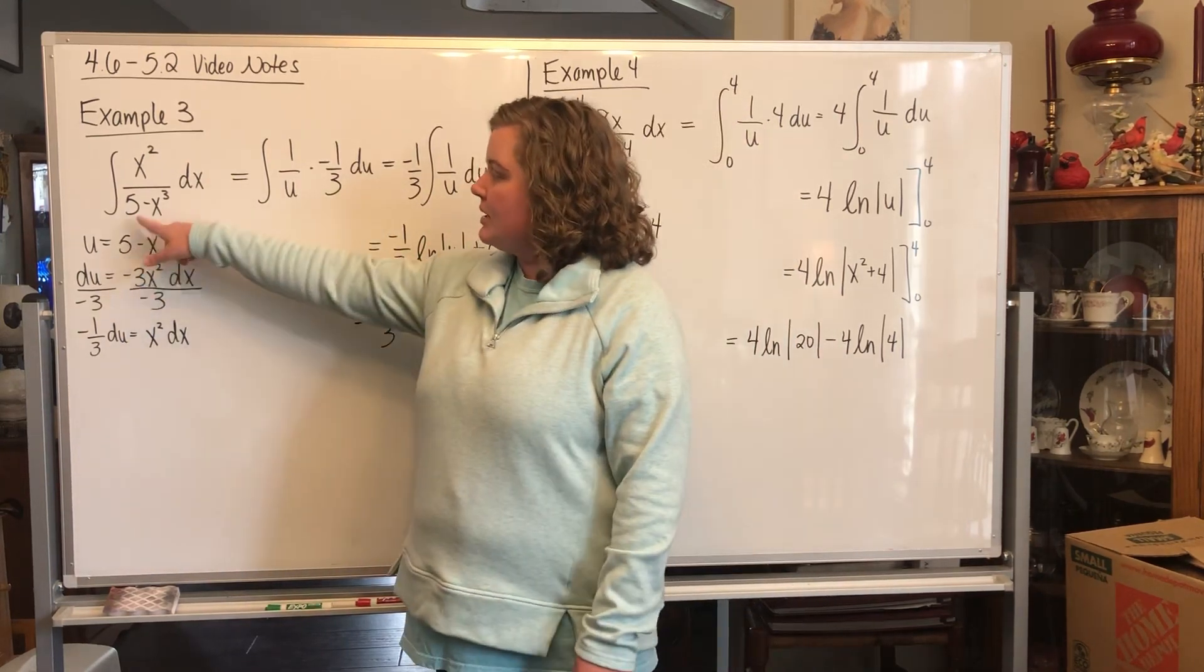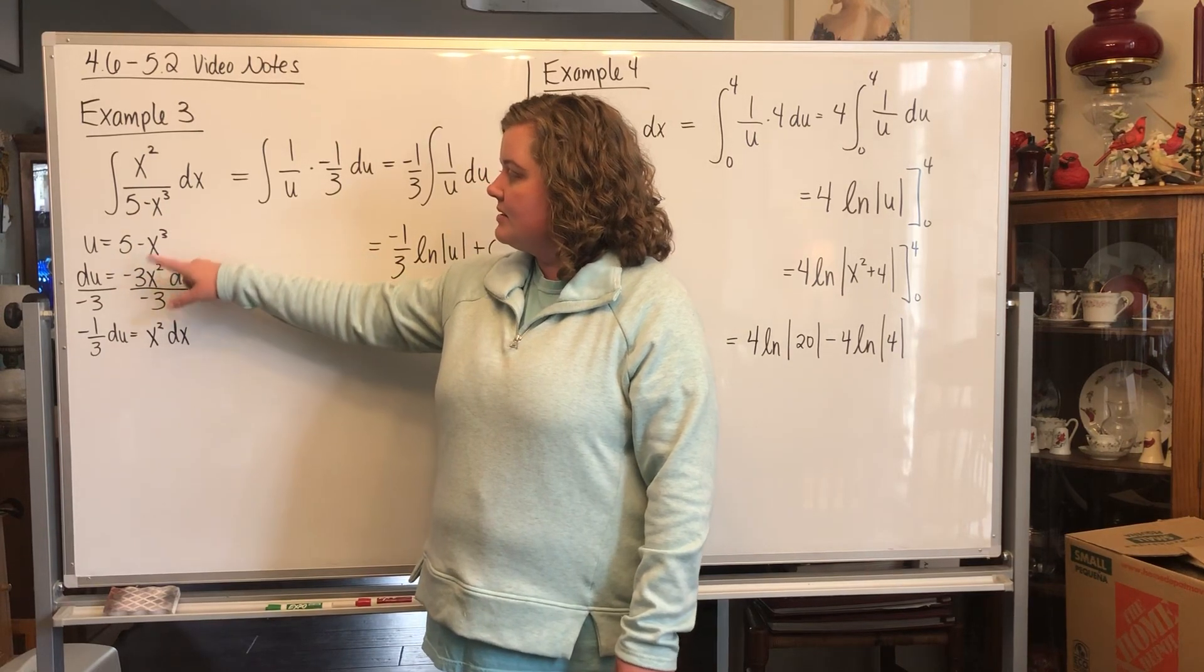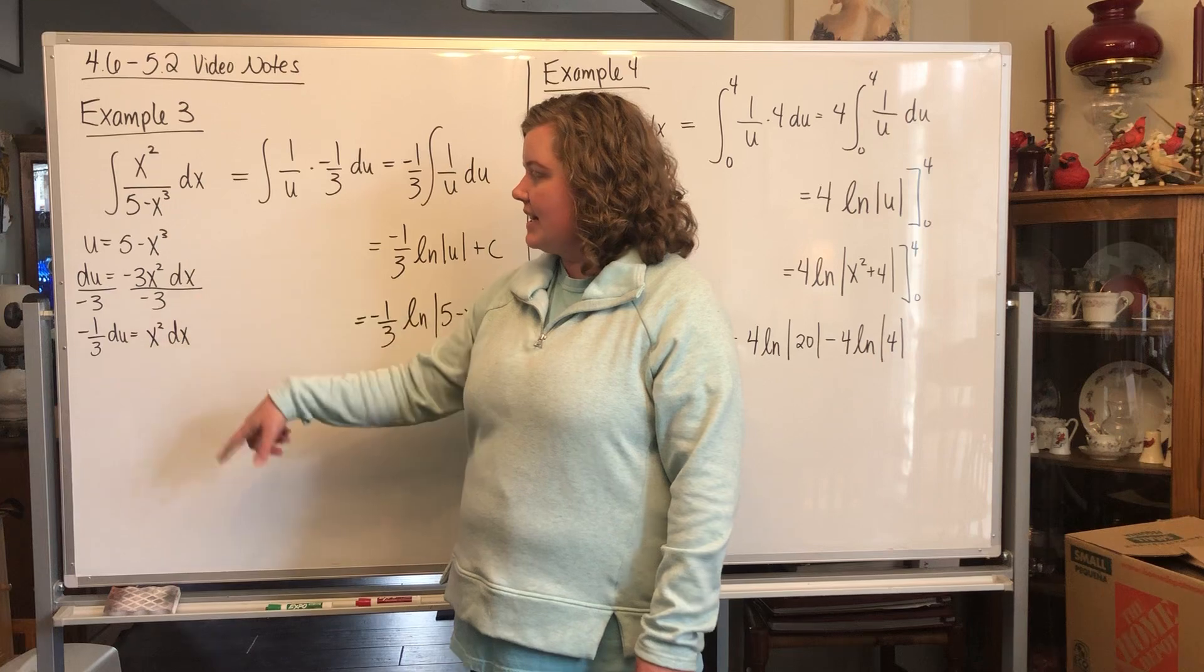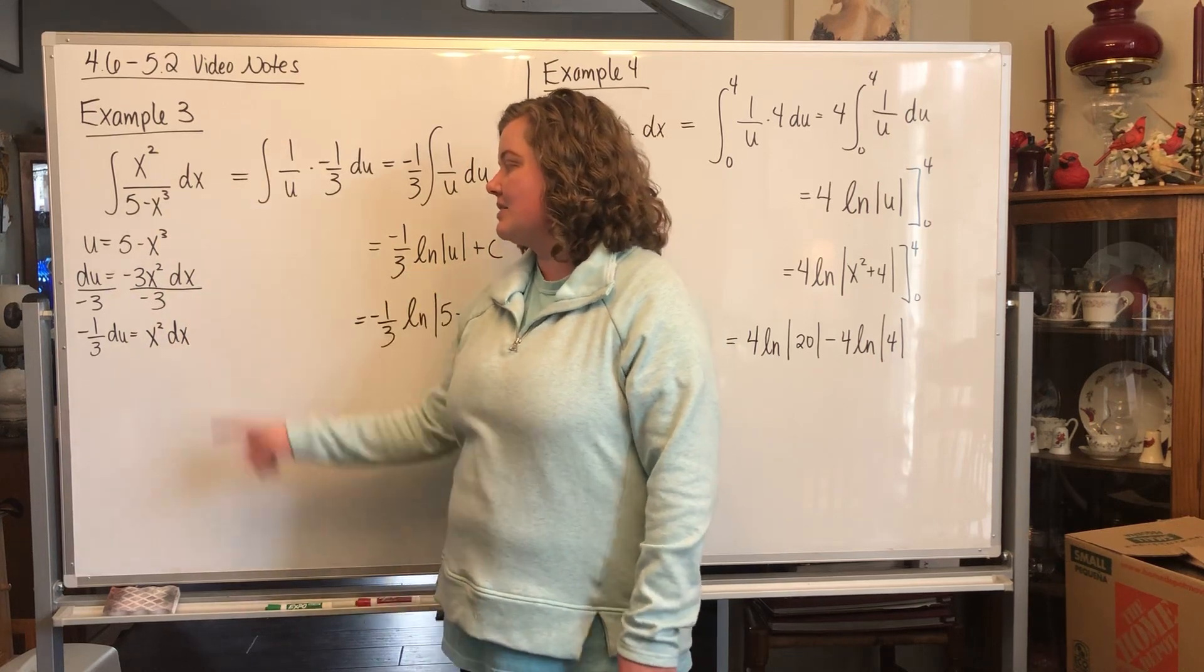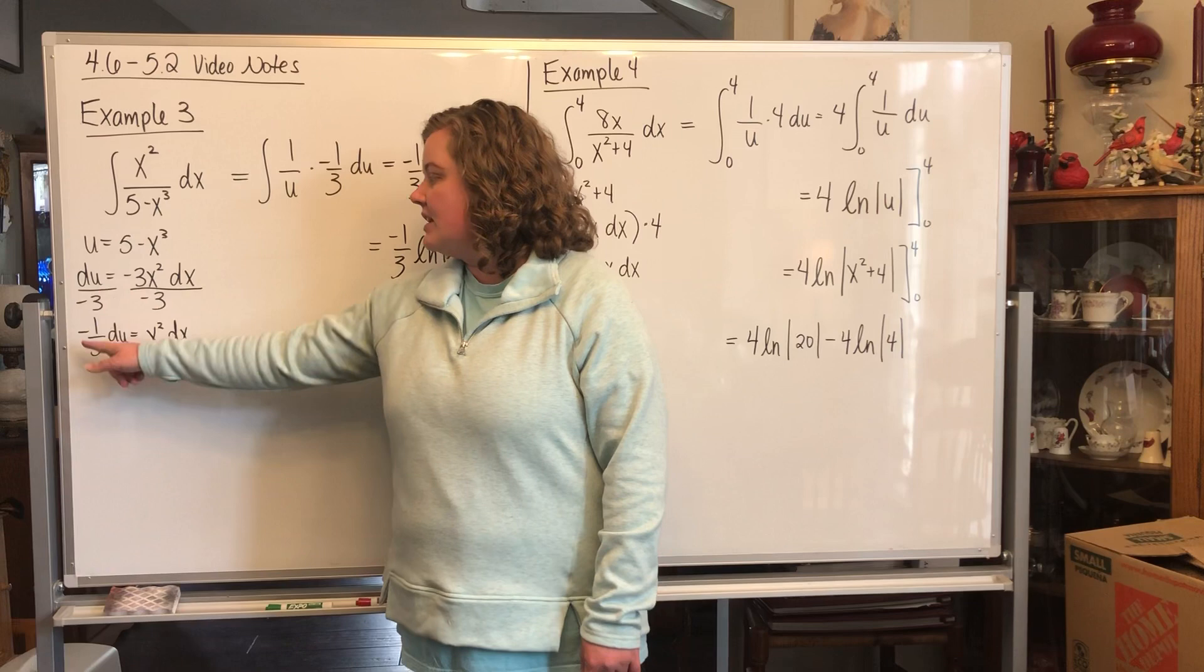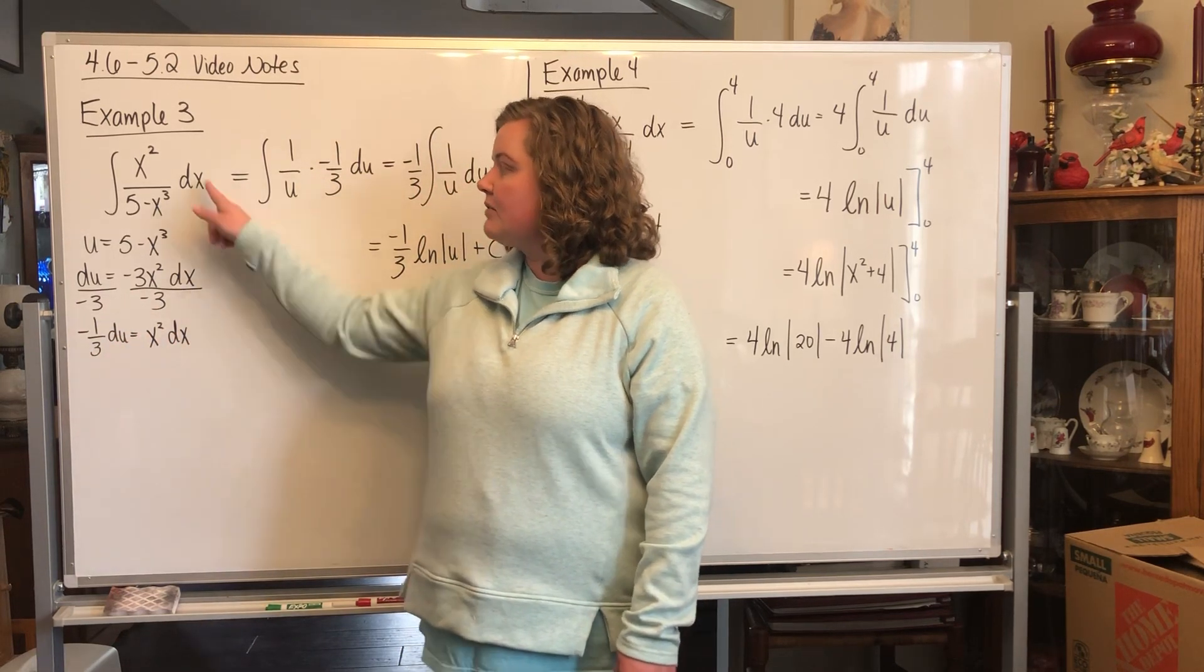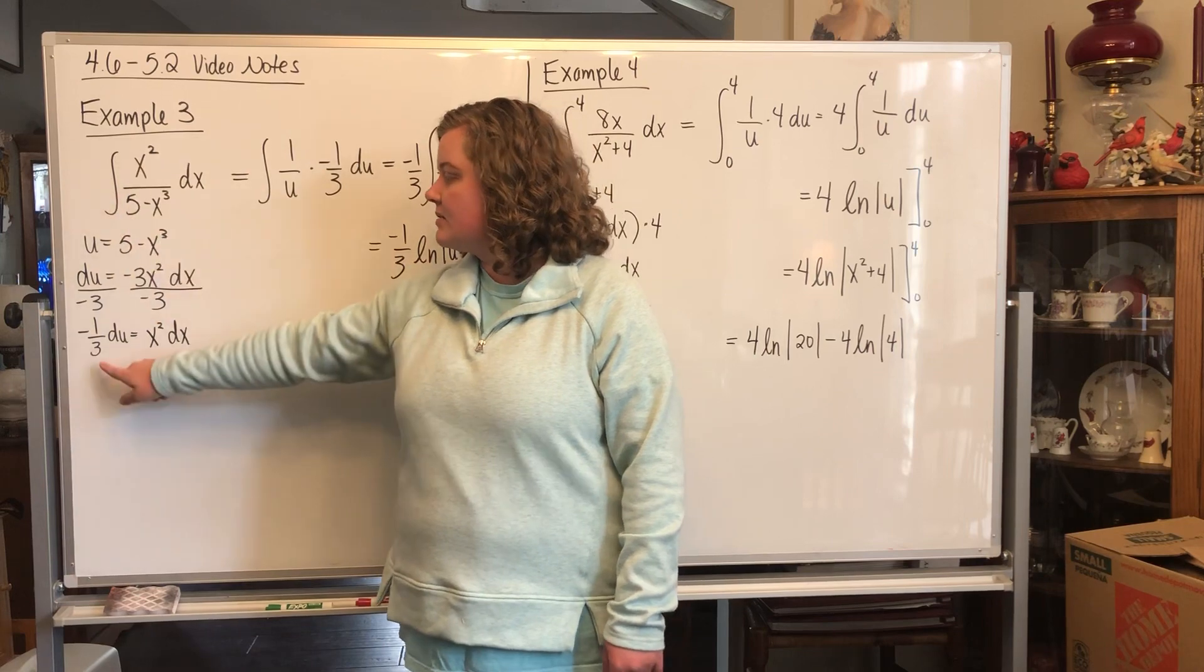You're going to put your u equal to 5 minus x cubed. We take the derivative: du equals negative 3x squared dx. But there's no negative 3 up there, so we're going to divide by negative 3 on both sides. You get negative 1 third du equals x squared dx. Now we can replace x squared dx with this.